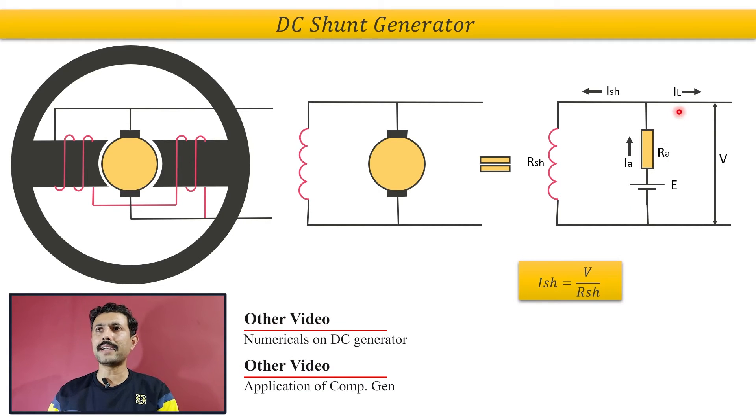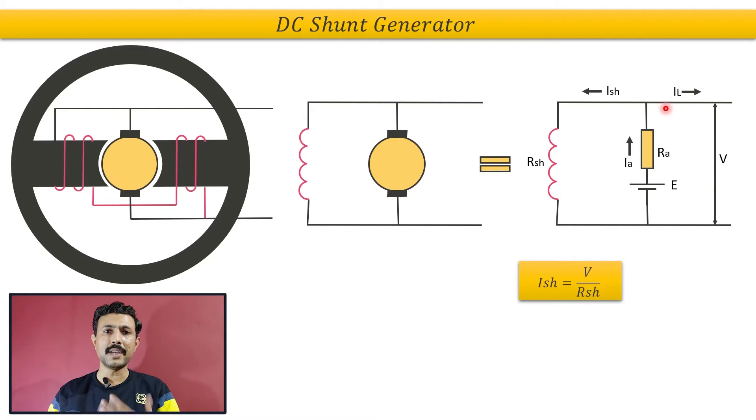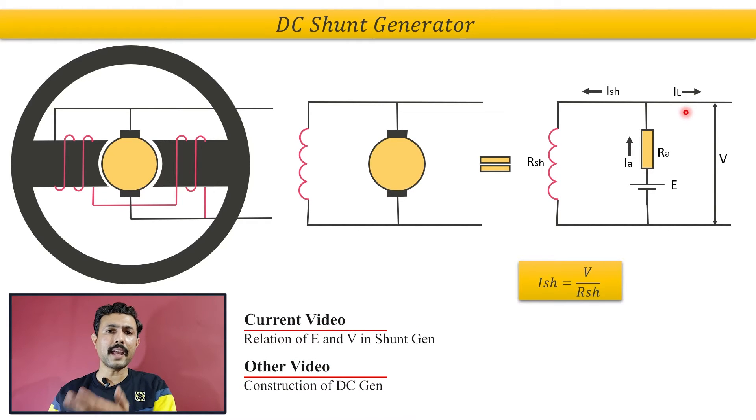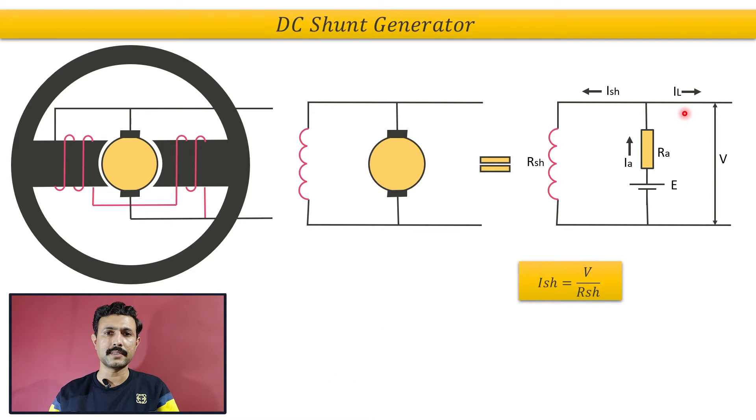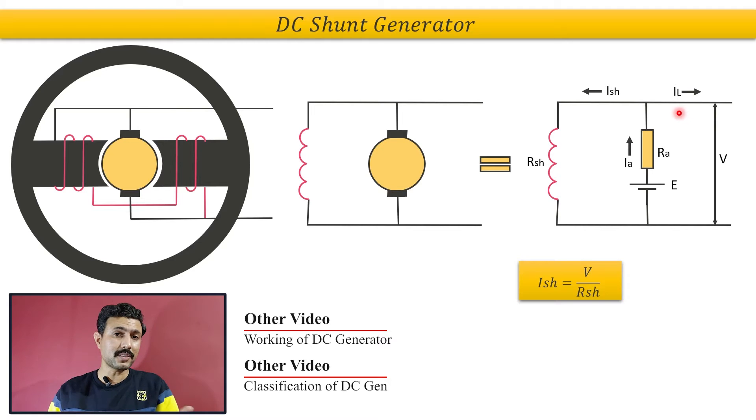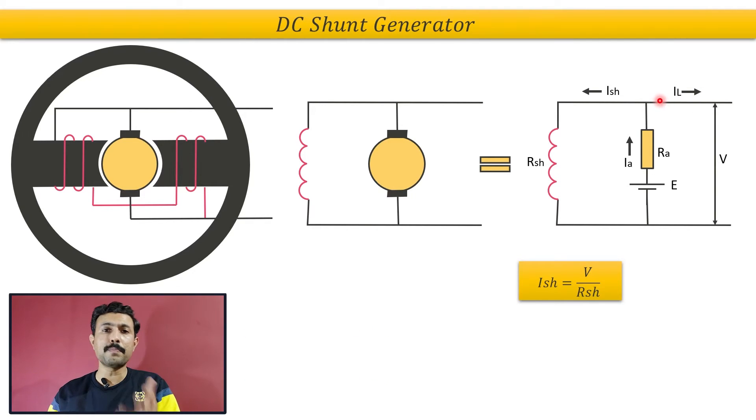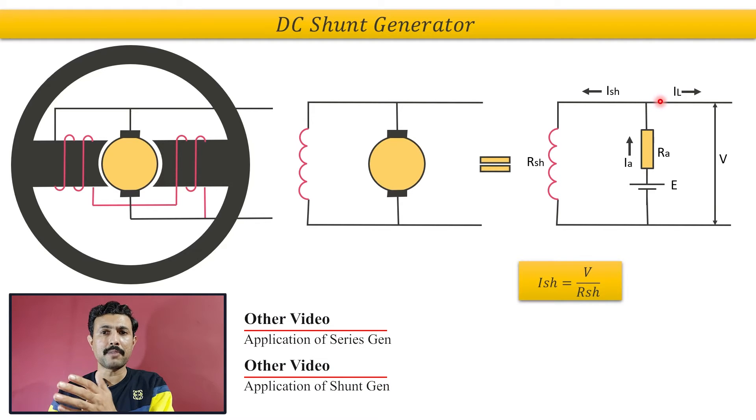The next quantity is IL, the load current. Majority of the time, if you are talking about practical generators, you can add an ammeter over there and from that ammeter you can get the load current. And if you are solving numericals, then it is possible that either load current is directly given or load power is given and from that load power you need to calculate the load current.